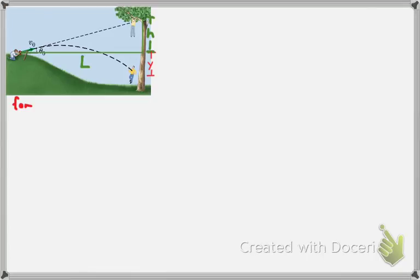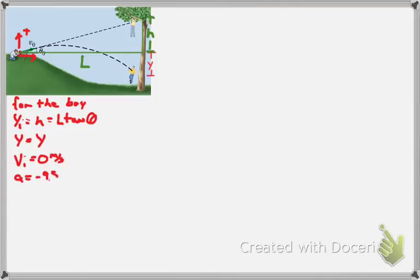So now this is done in the MIT video. What happens if we aim at an angle? If we aim at an angle, the boy is going to drop, and he starts at position h and falls down and ends at some position y.